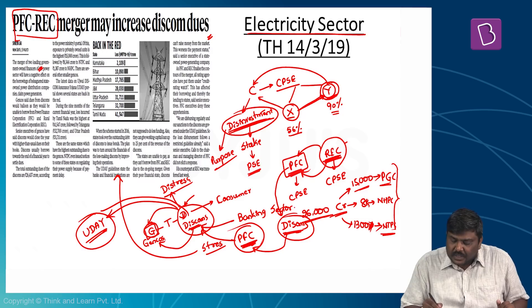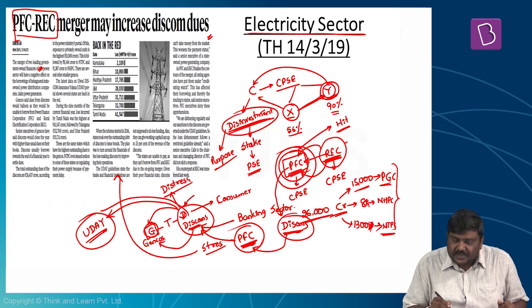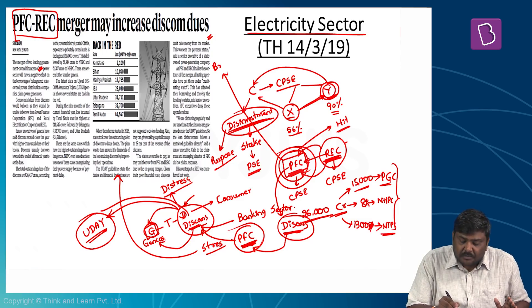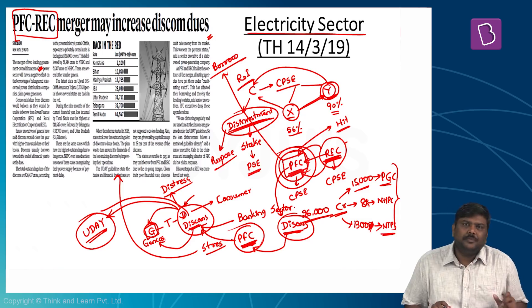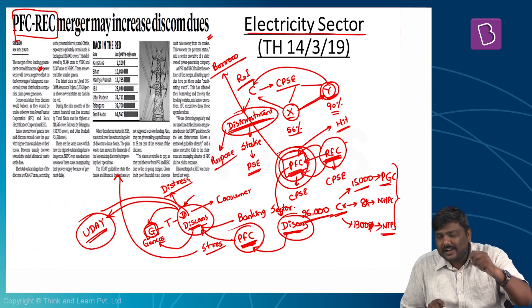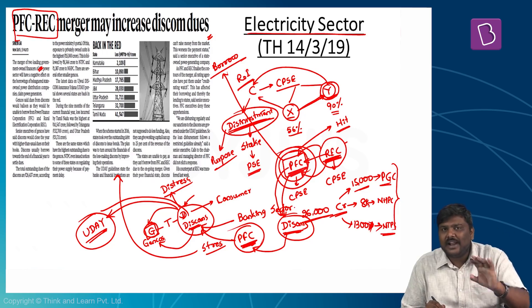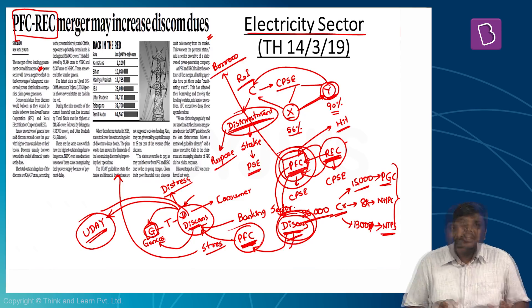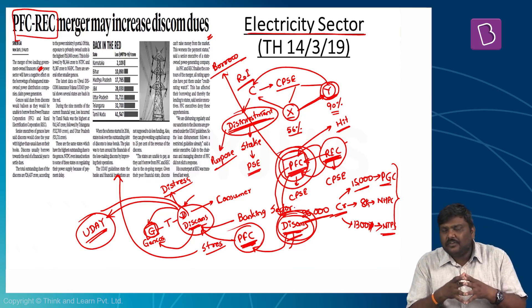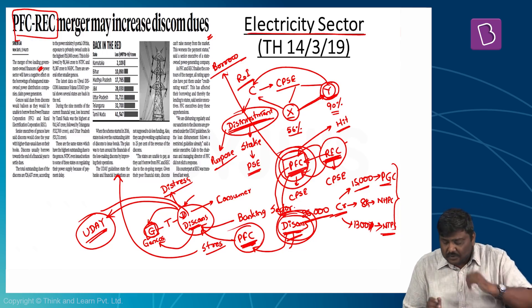Two reasons make borrowing from PFC difficult. First, the final decision on the REC-PFC merger is still pending, making it difficult for PFC to lend. Second, the proposed merger has caused credit rating agencies to keep PFC under observation, making it very difficult for PFC to borrow from the market at a lower rate of interest. If PFC borrows at a higher rate, it will lend to discoms at a higher rate, which is again a negative outcome for the discoms.